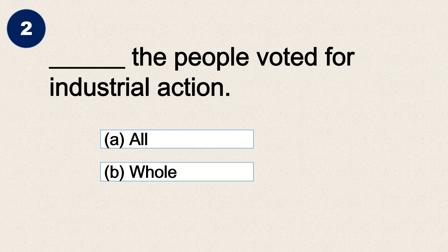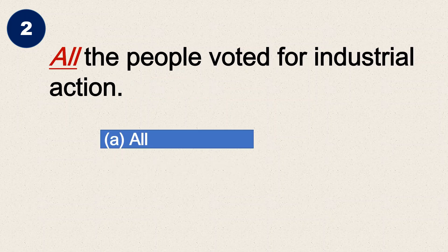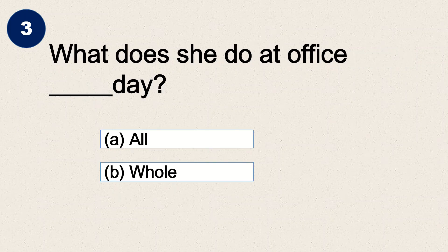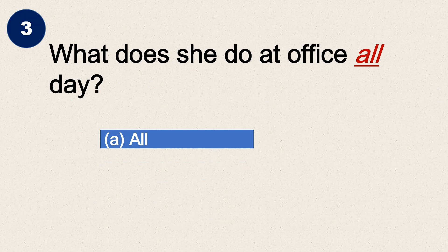Question two: blank the people voted for industrial action. The options are 'all' or 'whole,' and the answer is 'all' — all the people voted for industrial action. Question three: what does she do at the office blank day — 'all day' or 'whole day'? The answer is 'all' — what does she do at the office all day.